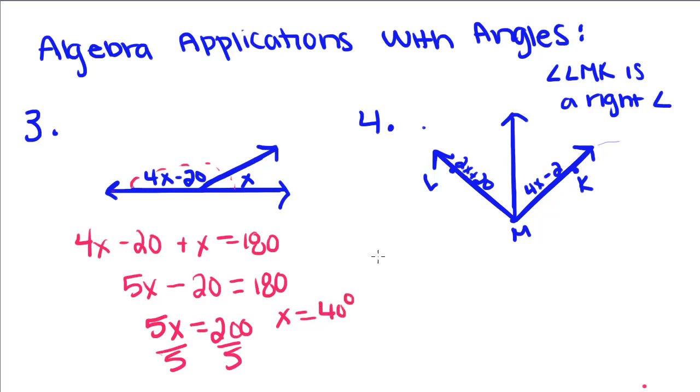Now, I have to go back in and plug this in to this equation. 4 times 40 minus 20. 4 times 40 is 160 minus 20 gives me 140. And if you want to go back and check, 140 plus 40 and set it equal to 180. And 180 does, in fact, equal 180. So, that's how we know those answers are right.